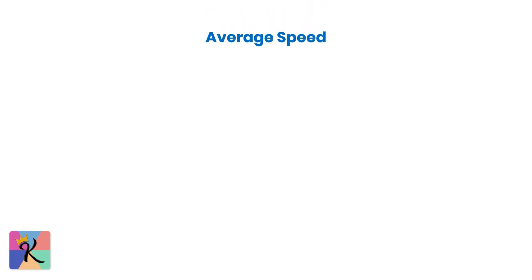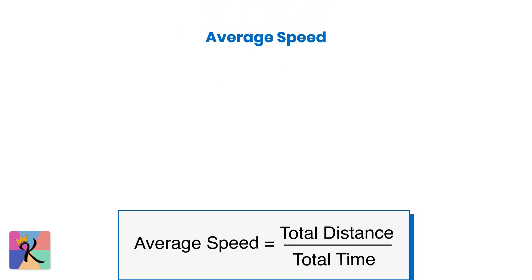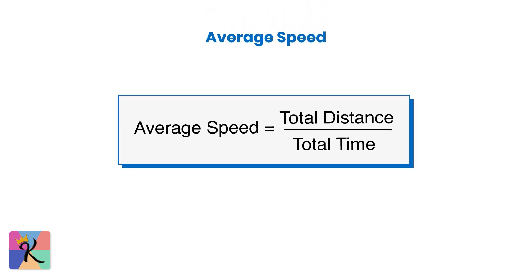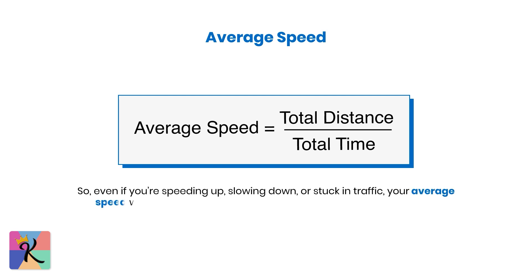On the other hand, average speed gives you the bigger picture. It's calculated by taking the total distance you've traveled and dividing it by the total time it took to cover that distance. So even if you're speeding up, slowing down, or stuck in traffic, your average speed will summarize your journey by averaging out those changes.